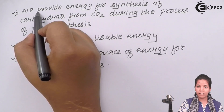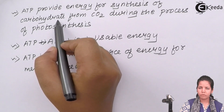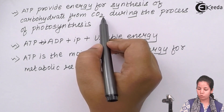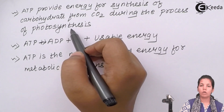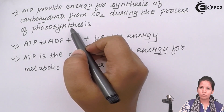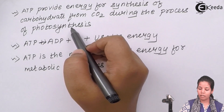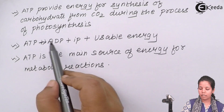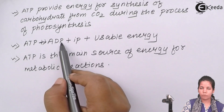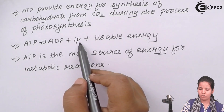ATP provides energy for the synthesis of carbohydrates — glucose — from CO2 during the process of photosynthesis. The process of photosynthesis uses CO2 from the atmosphere plus water, in the presence of chlorophyll in the leaf, to form a glucose molecule, which is a form of carbohydrate and the plant's food. ATP is converted into ADP plus inorganic phosphate, releasing usable energy.